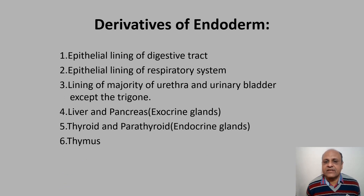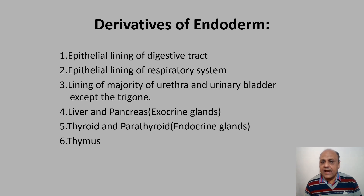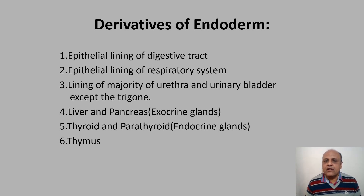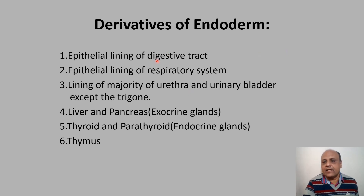The epithelial lining of the digestive tract and the respiratory tract are derived from endoderm. The lining of the majority of the urethra and urinary bladder is also endodermal — except the trigone, which is derived from mesoderm. Exocrine glands including the liver and pancreas, and endocrine glands including the thyroid and parathyroid, are derived from endoderm. The thymus is also derived from endoderm.